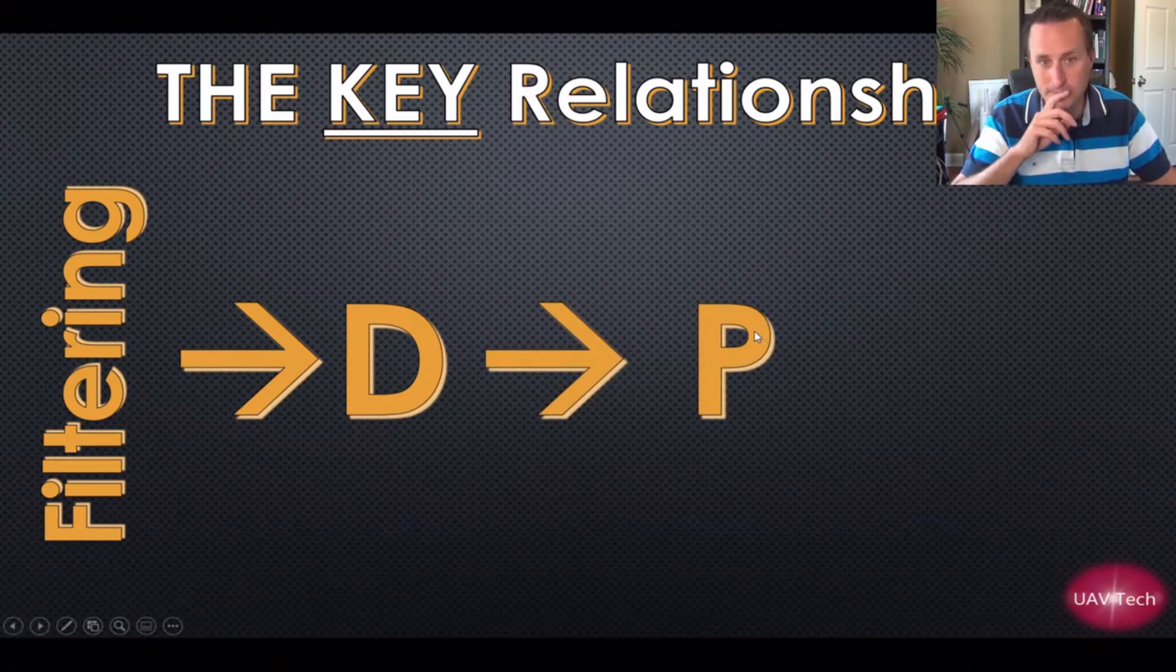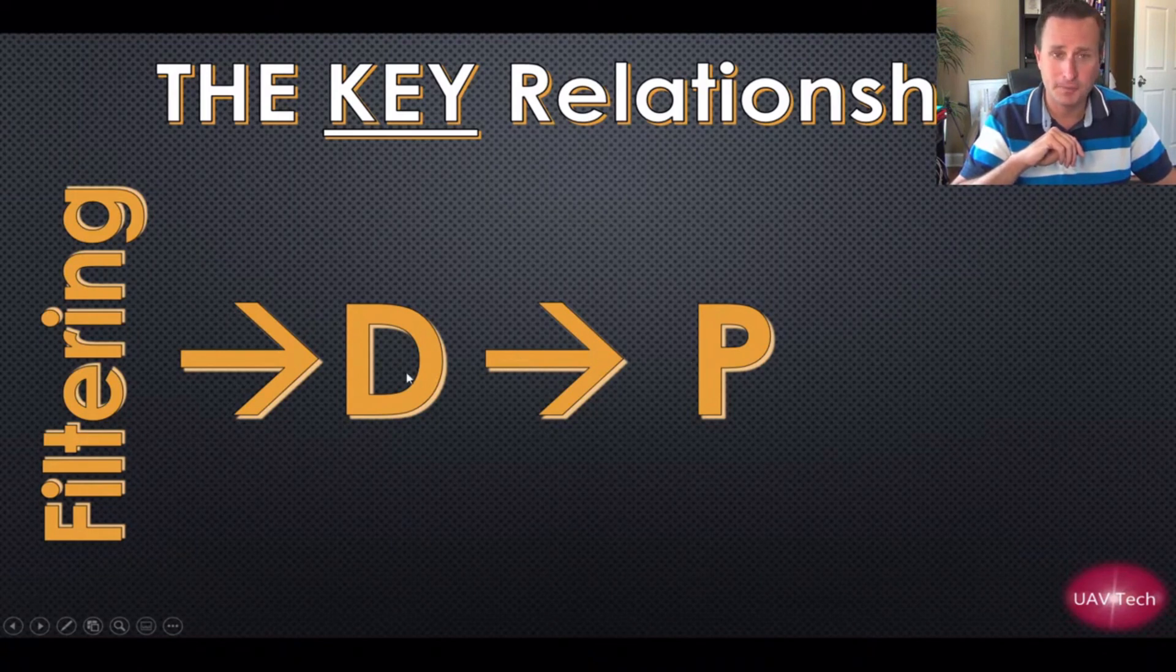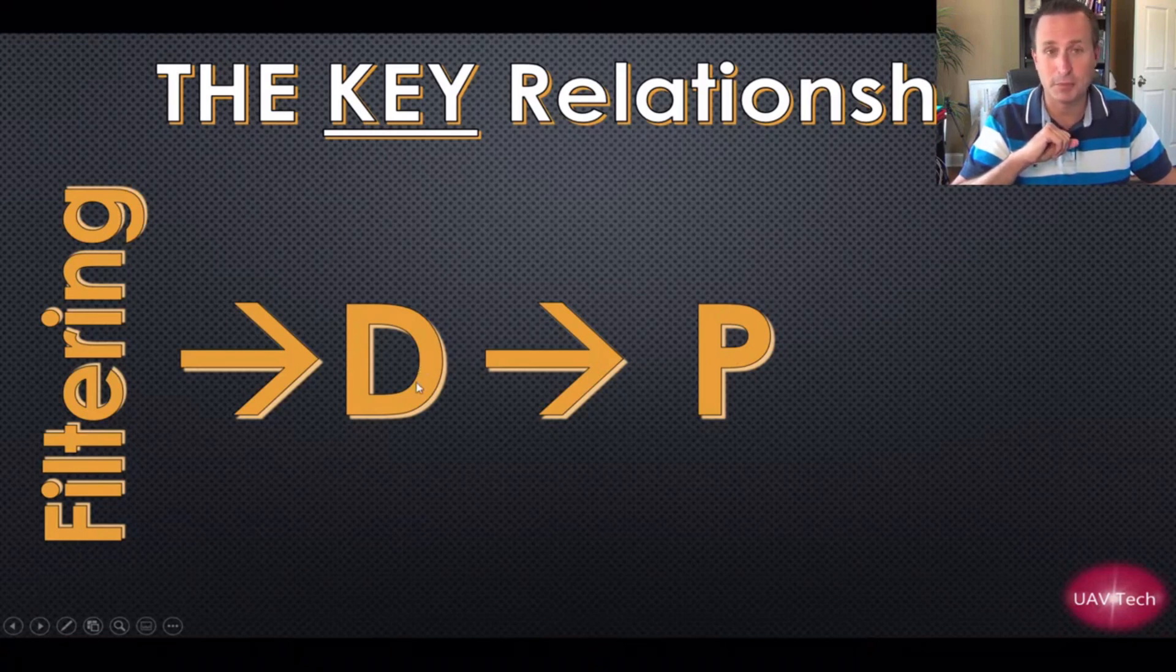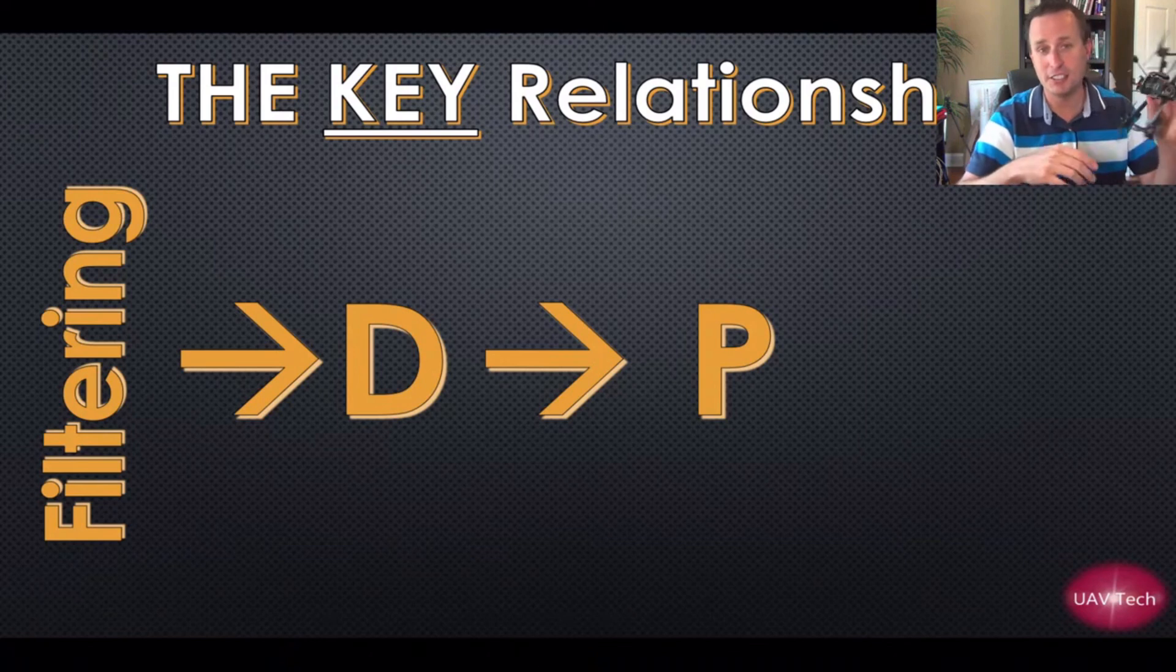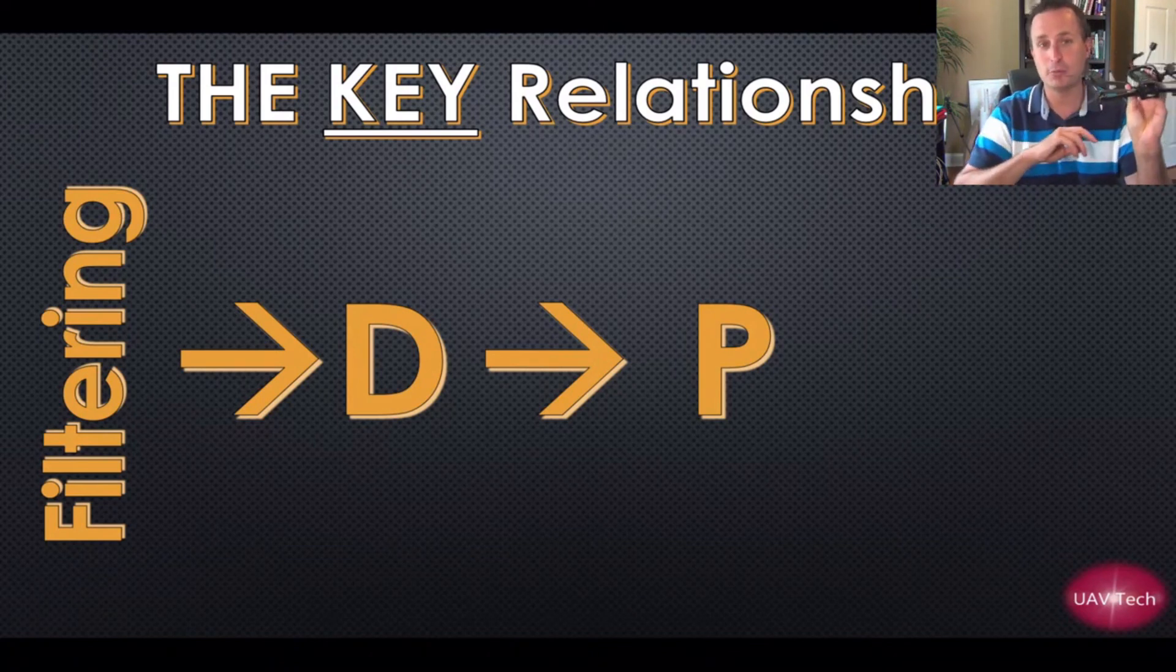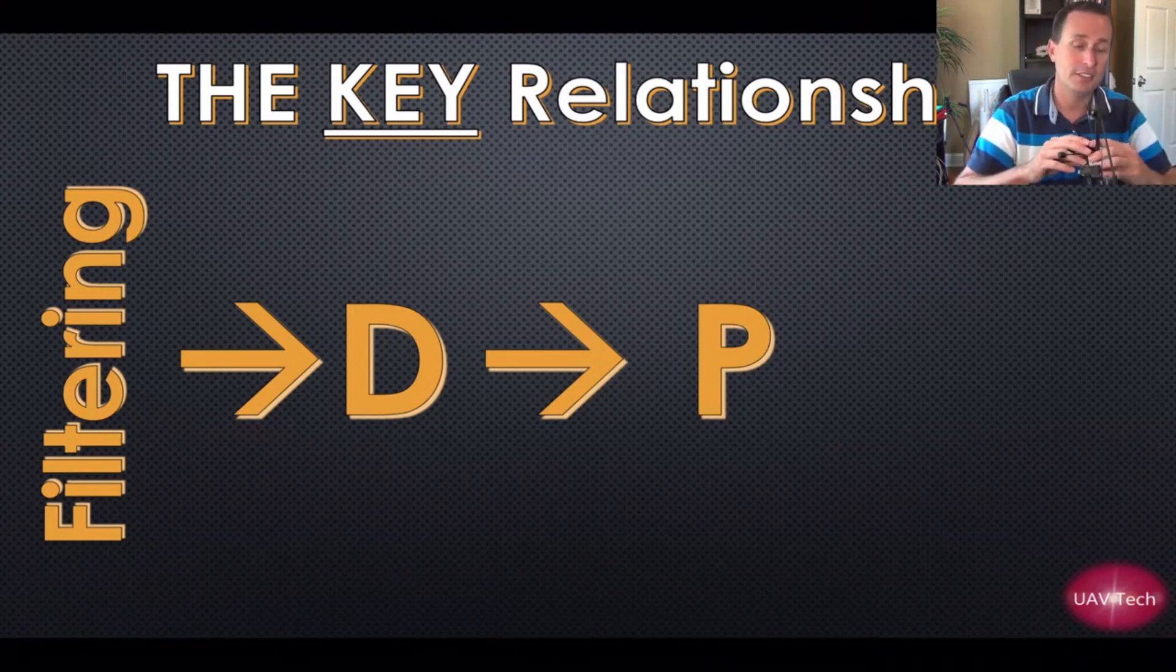Well the same thing goes for the P term to the D term, right? If you have a lot of D term, you are going to need a lot of P term because you're dampening the heck out of it - that's what the D term is, dampening. So when the quad wants to move left or move right and you command a stick input, that D term is fighting that. Or if the wind pushes the quad, the D term is going to fight that - it doesn't want the thing to move.